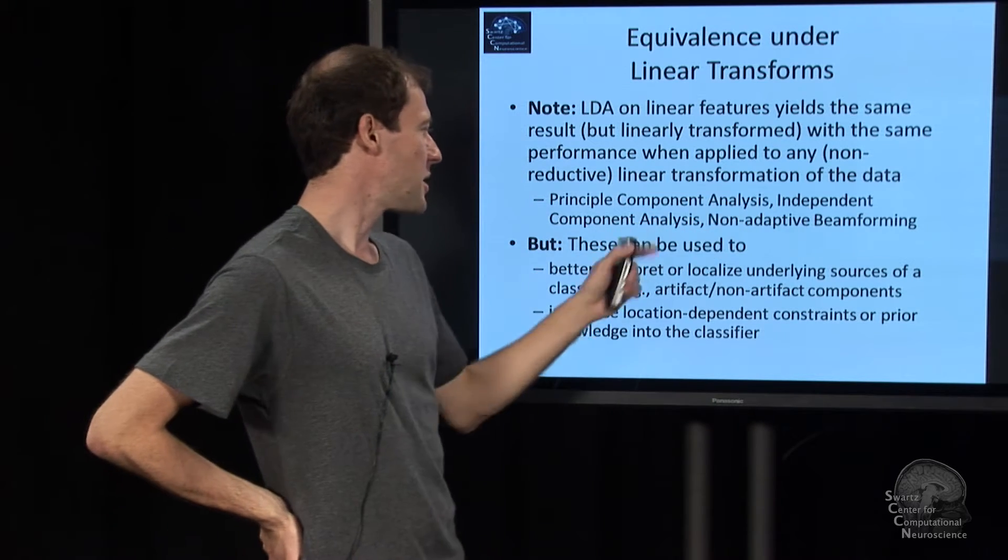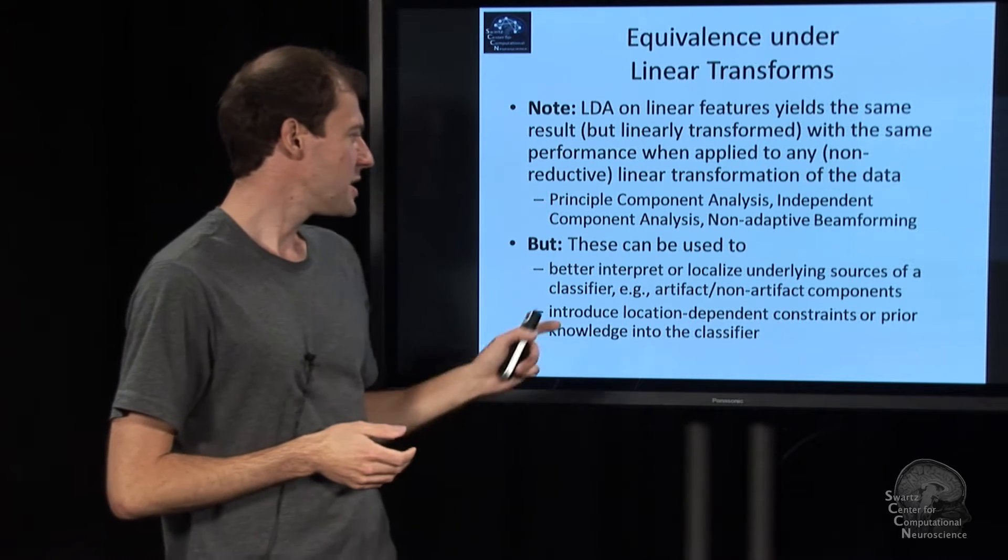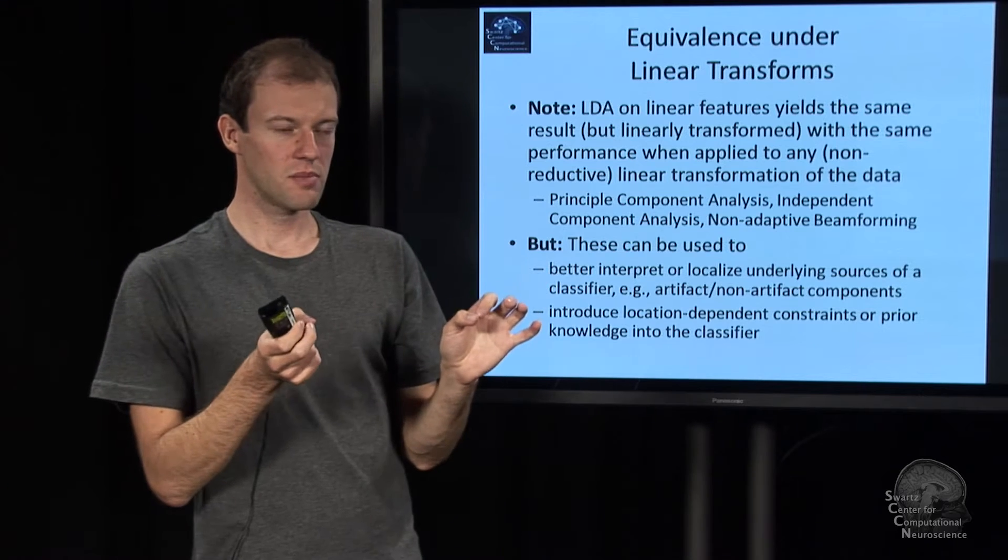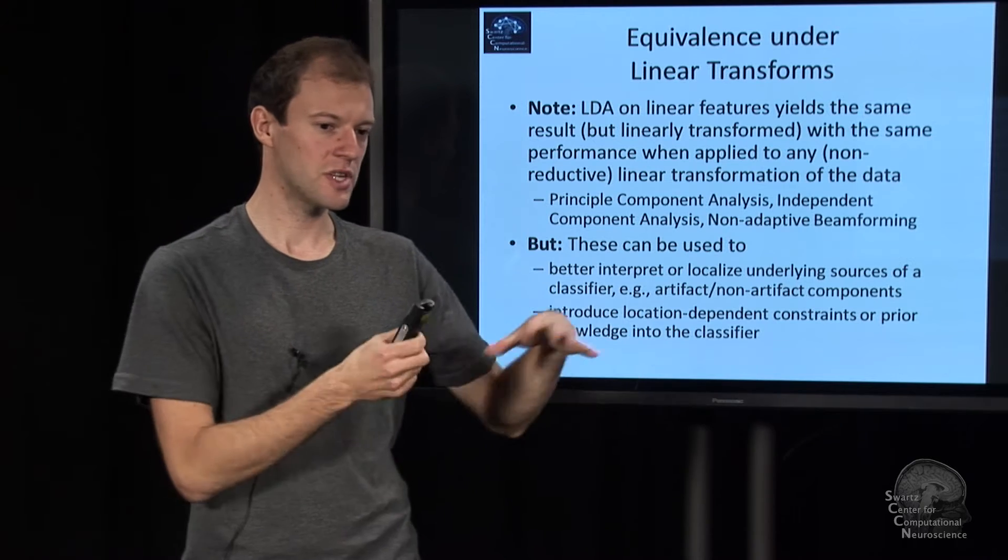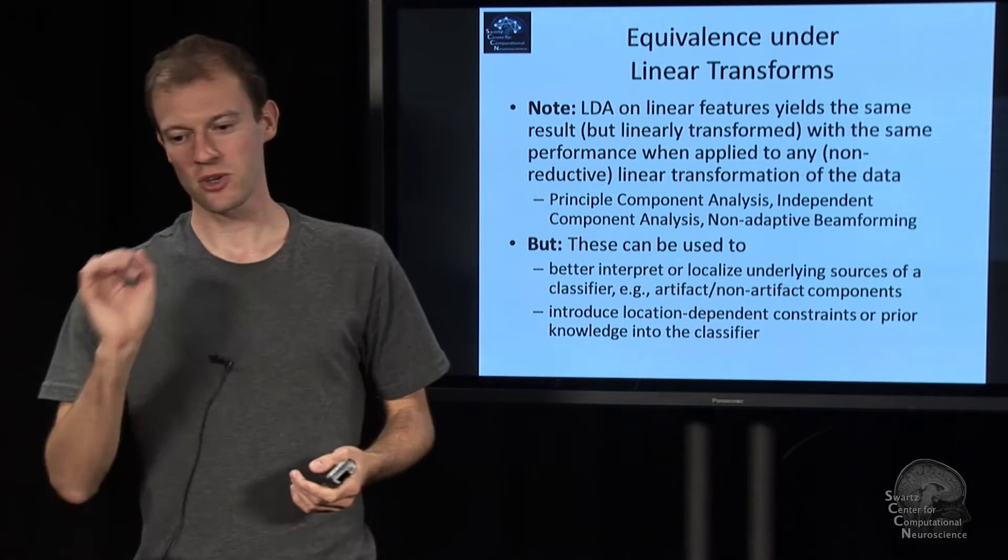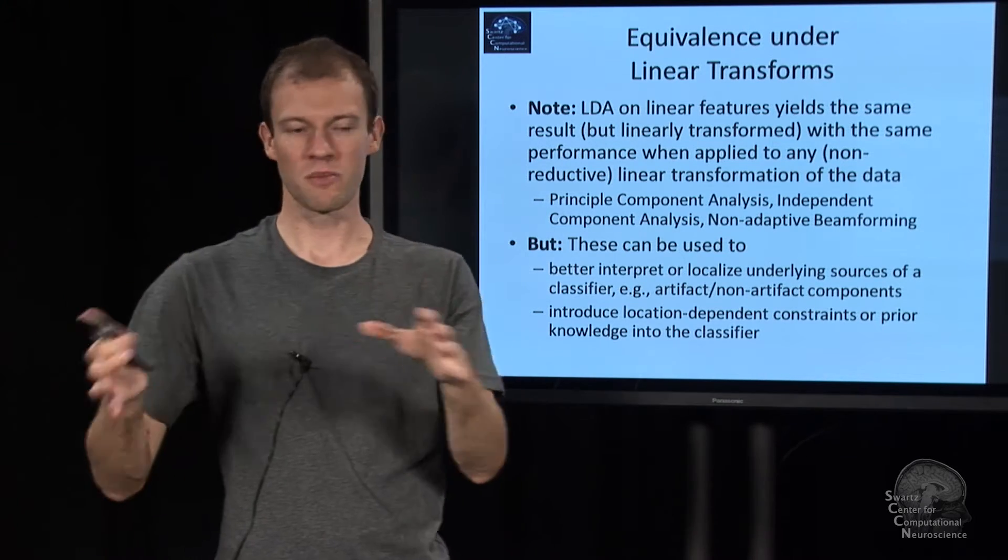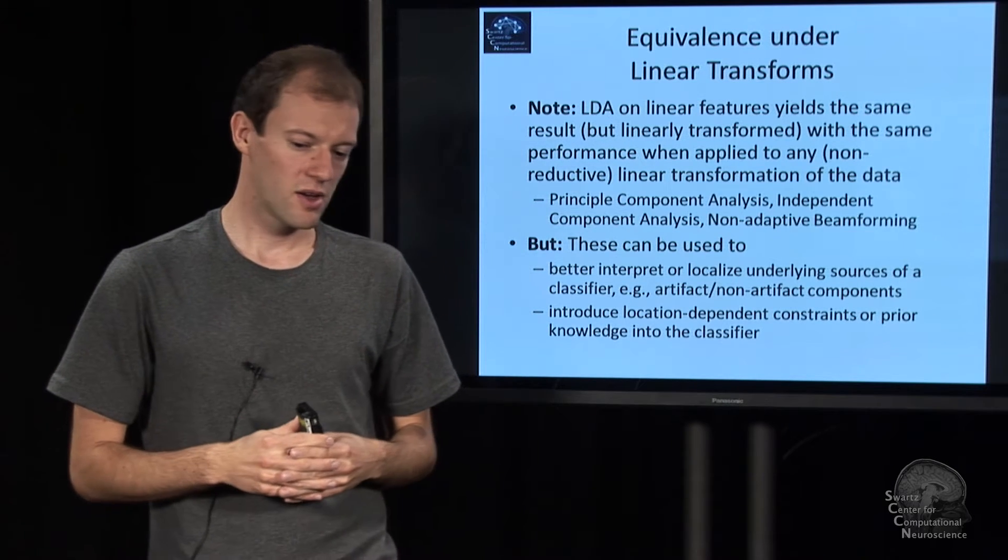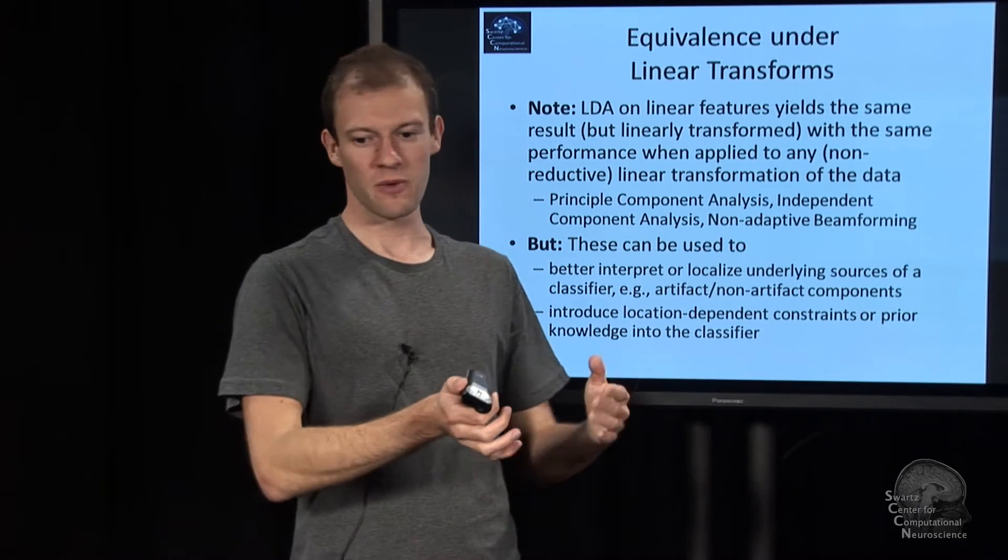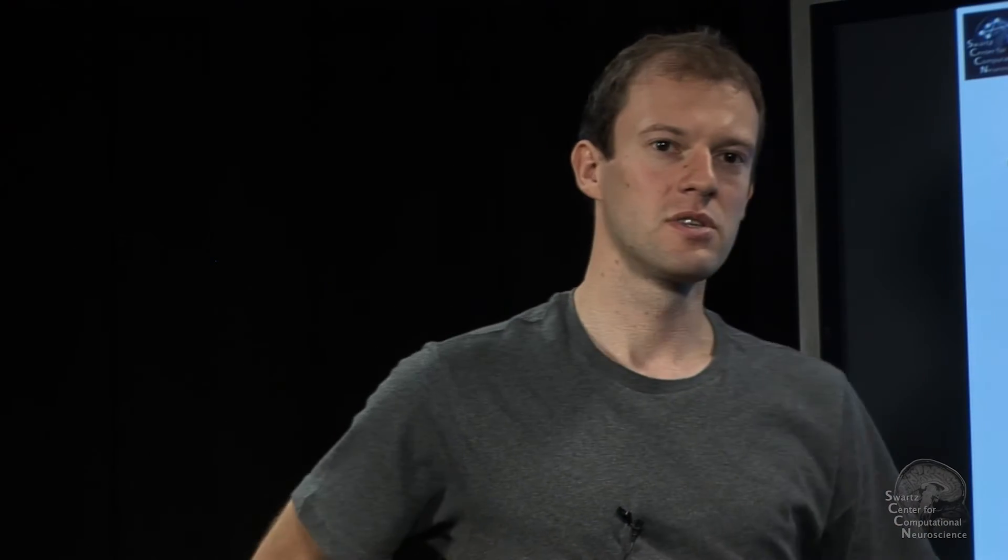However, if you have decompositions like independent component analysis, which gives you source time courses, then essentially LDA assigns you a weight, not to every channel, but to every component. And so suddenly, you can say, this component here of the signal, like the blinks, are this relevant. And that component, like a muscle, is that relevant. And so you can reason and say things such as, I am not using muscular activation, so it doesn't depend on artifacts. Or I can say, I'm primarily using an independent component that, with dipole fitting, I managed to localize in the motor cortex.